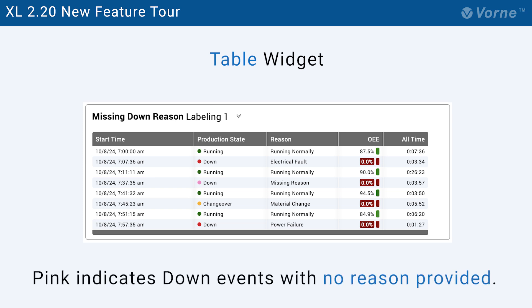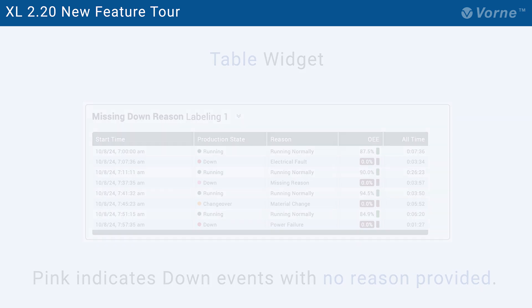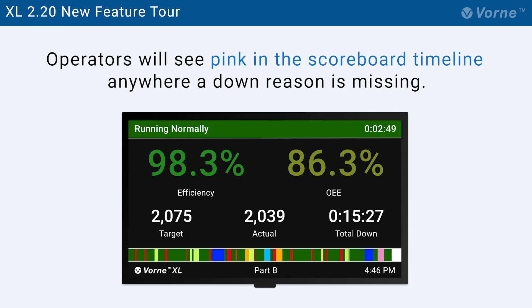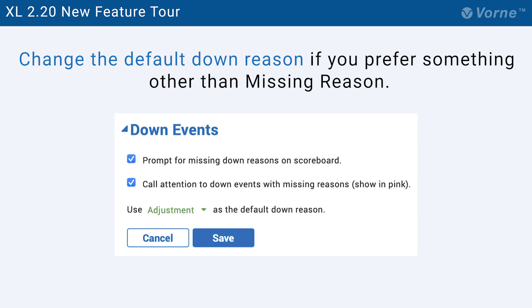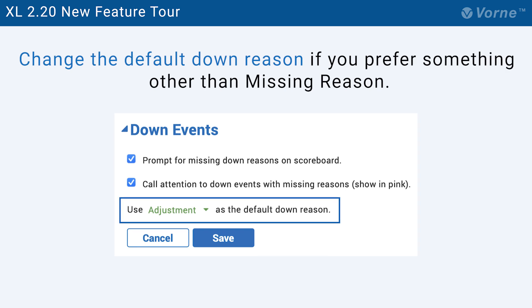Pink indicates down events where no reason has been provided. Your plant floor team will also see pink right in the timeline of your XLHD scoreboard anywhere a down reason is missing. With 220 you can also disable the missing reason prompt for your scoreboard, which we recommend if your operators are not responsible for assigning reasons. And you can change the default down reason if you prefer something other than missing reason.